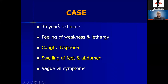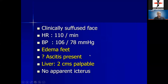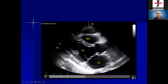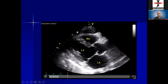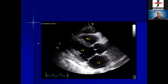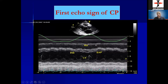Clinical case: a 35-year-old male presenting with cough, dyspnea, swelling of feet, abdomen, gastrointestinal symptoms, edema, and ascites was referred to a gastroenterologist. Many patients have been sent for liver transplantation when they actually had constrictive pericarditis. He developed marked tachycardia with a heart rate of about 170 and was referred to a cardiologist. A very jerky motion of the RV was noticed. The same classical ventricular interdependence gave us the diagnosis of constrictive pericarditis.